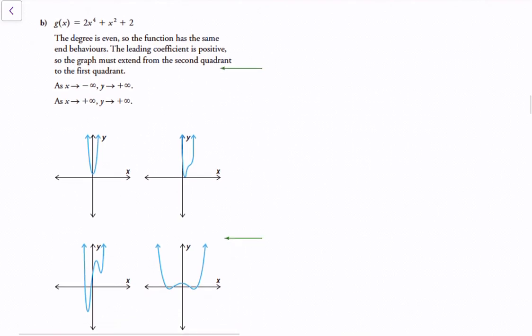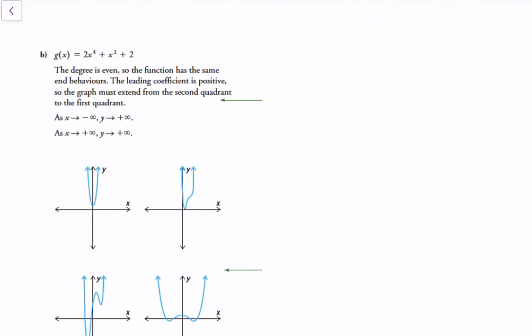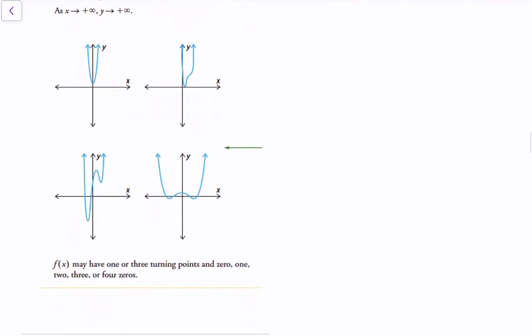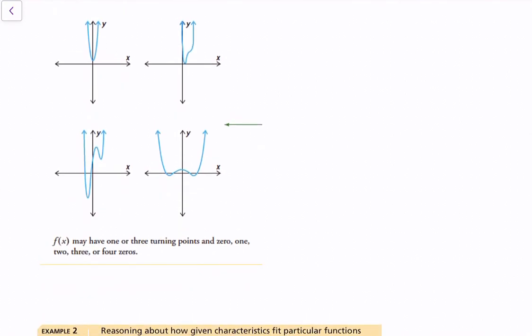For g(x), the degree is even, so the function has the same end behaviors and will be symmetrical. The leading coefficient is positive, so it starts from the second quadrant and goes to the first quadrant. These could be potential shapes the function takes, with varying numbers of zeros and turning points.